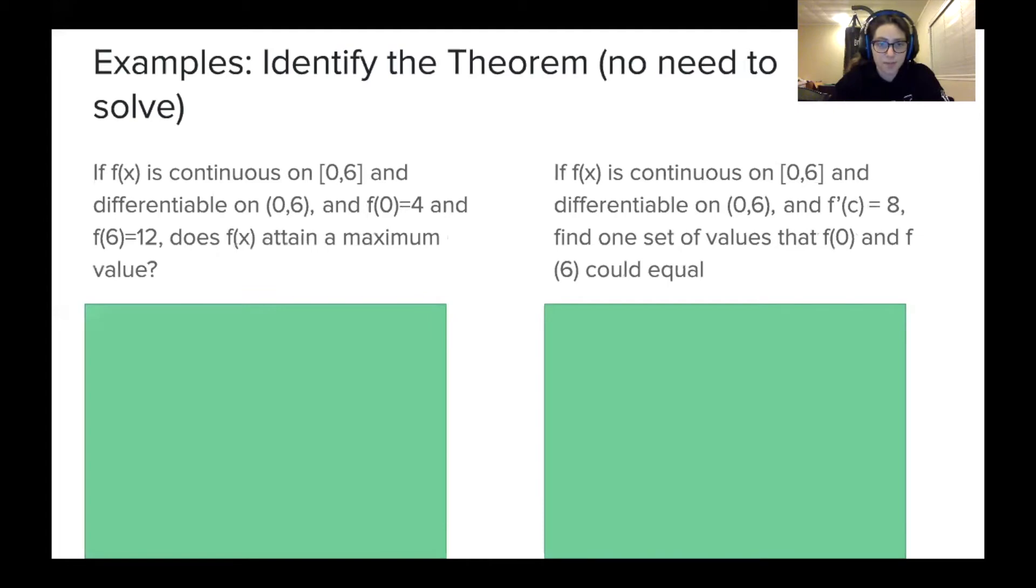So I have two more before we get into actual math that I'm going to have you guys solve. So again, same frame of the problem. So I ask you, does f(x) attain a maximum value? According to the extreme value theorem, it would. Again, you don't have to explain why, but the extreme value theorem just states that a function has to have a maximum and a minimum value if it's continuous. So the function is continuous, therefore there must be a max.